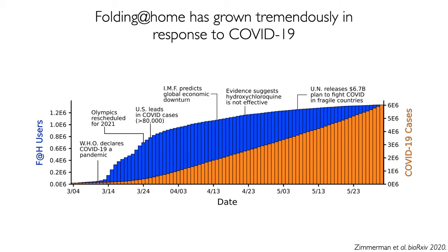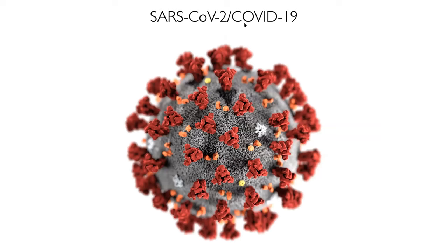With all of this compute power, we started simulating every protein we could from the viral proteome, as well as other coronaviruses and human proteins involved in the immune response or activity of the viral proteins. One of my favorites is our work on the spike. As you probably know, all of these red protrusions in the canonical image of the virus are called spikes.